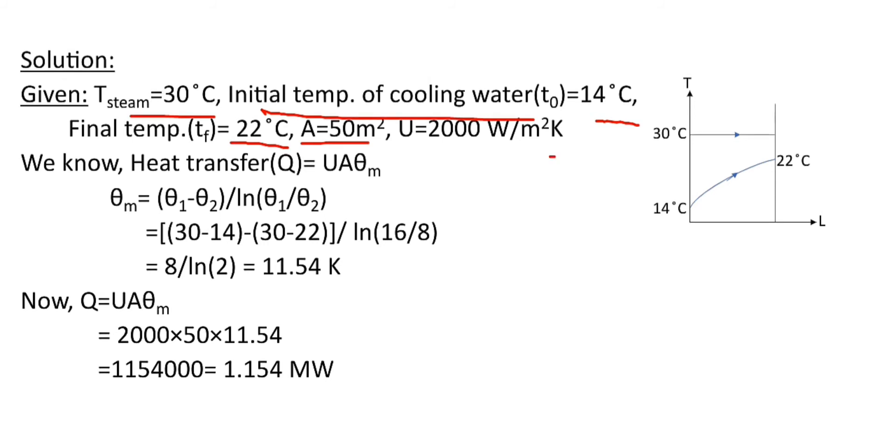And overall heat transfer coefficient that is U is 2000 Watt per meter square Kelvin. Since condenser removes the latent heat of steam to convert it into liquid, the temperature will remain same.